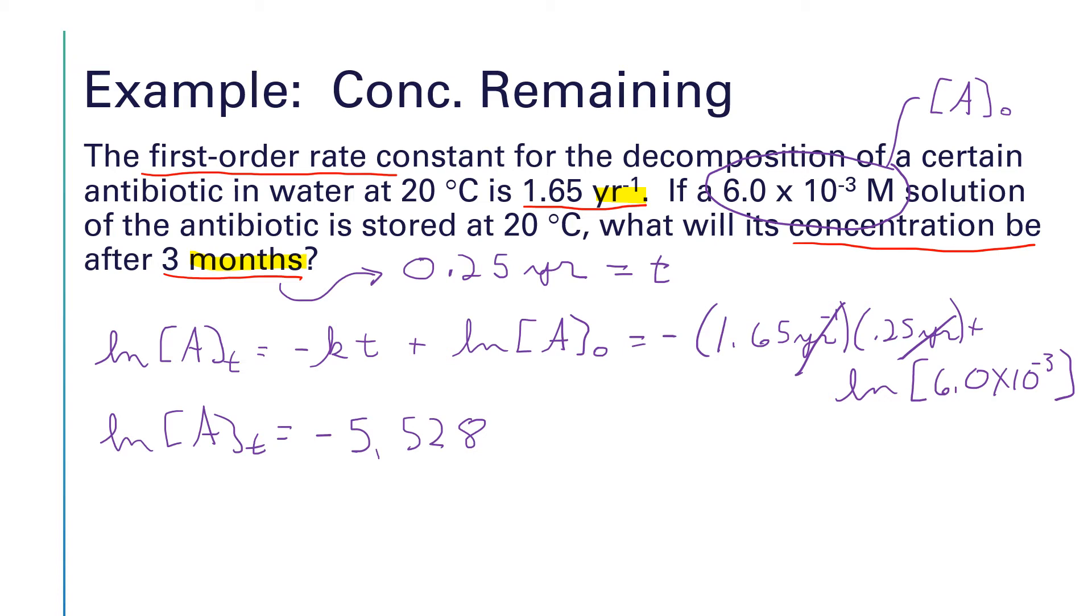The opposite function of taking the natural log is e to the x. And that's usually the second function on the natural log key. So if I take e to the x on both sides of this, I'm going to have e raised to the natural log of a sub t is equal to e to the negative 5.528.